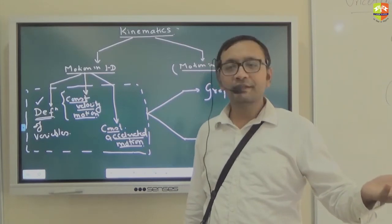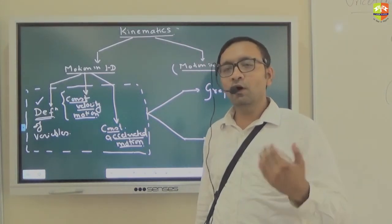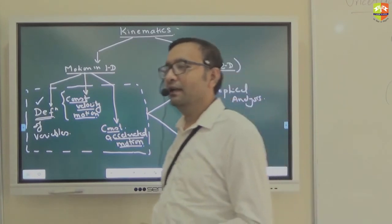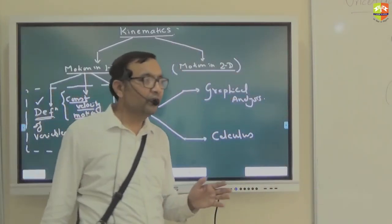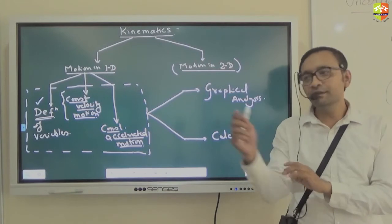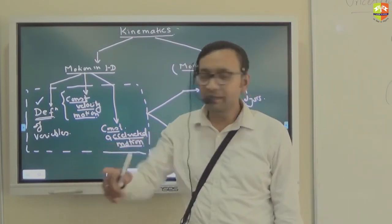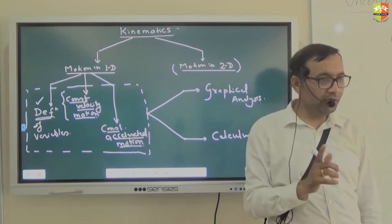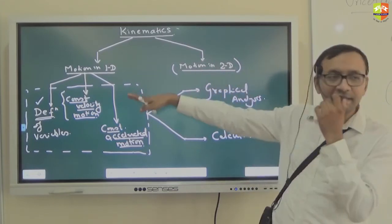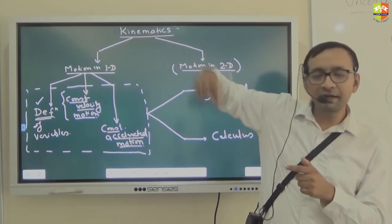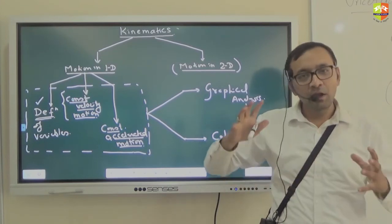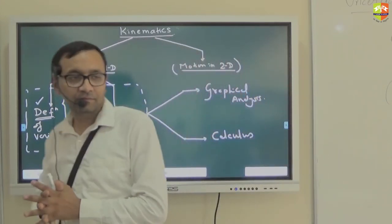In this chapter, the cause of motion is not what we are studying. But that doesn't mean there won't be numericals in which the cause of motion is involved. There can be a numerical from the laws of motion chapter where you first find the acceleration and then use kinematic fundamentals — those are mixed numericals. So the approach is: first finish this chapter, then finish the laws of motion chapter, and then come back again. All the chapters are intertwined.